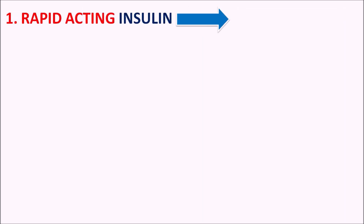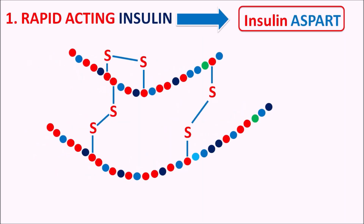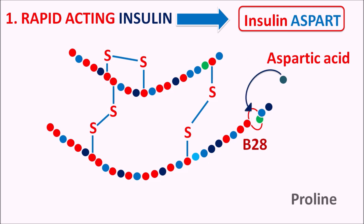For insulin aspart, aspartic acid replaces proline at the B28 position. This is a fast-acting insulin preparation with an onset of action within 5 to 15 minutes, so it can be given just before a meal to control postprandial glucose levels.